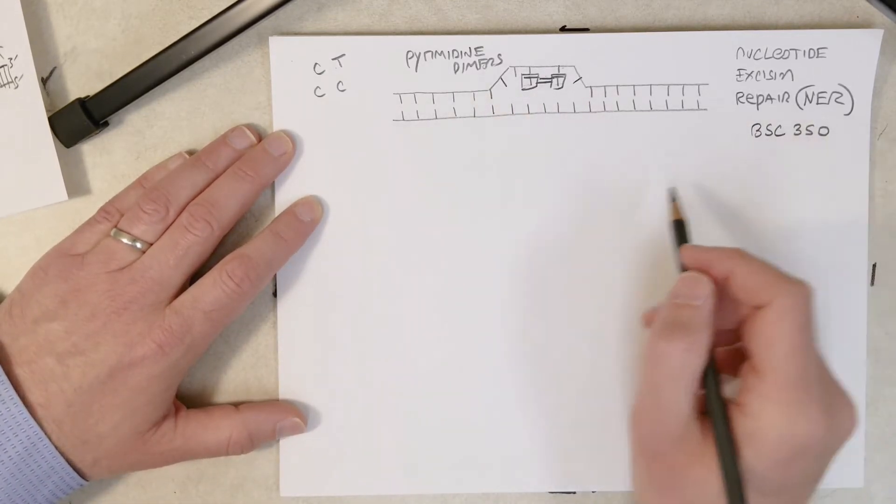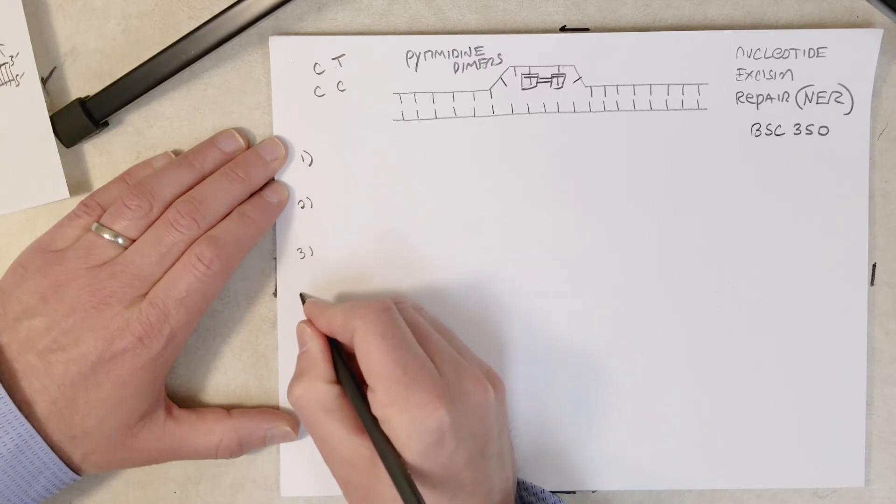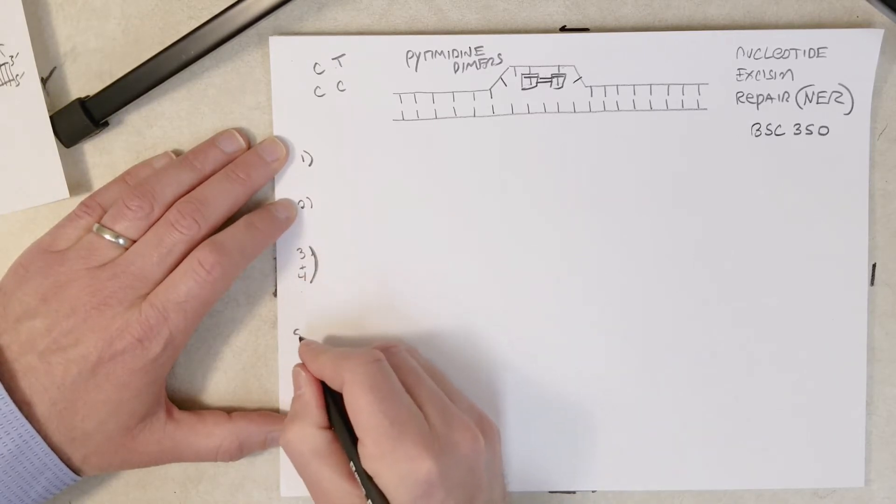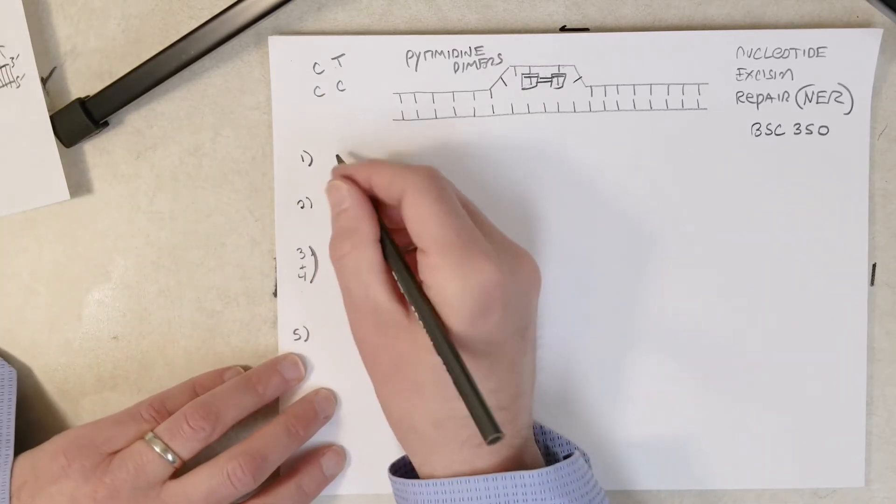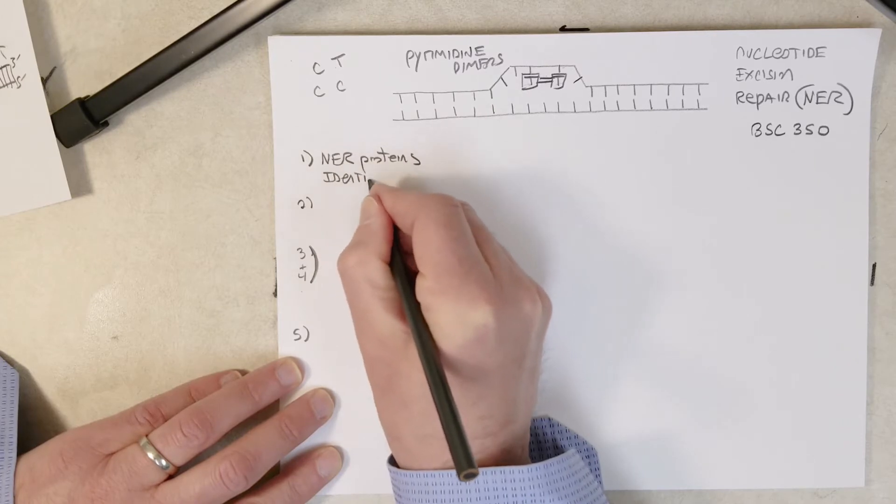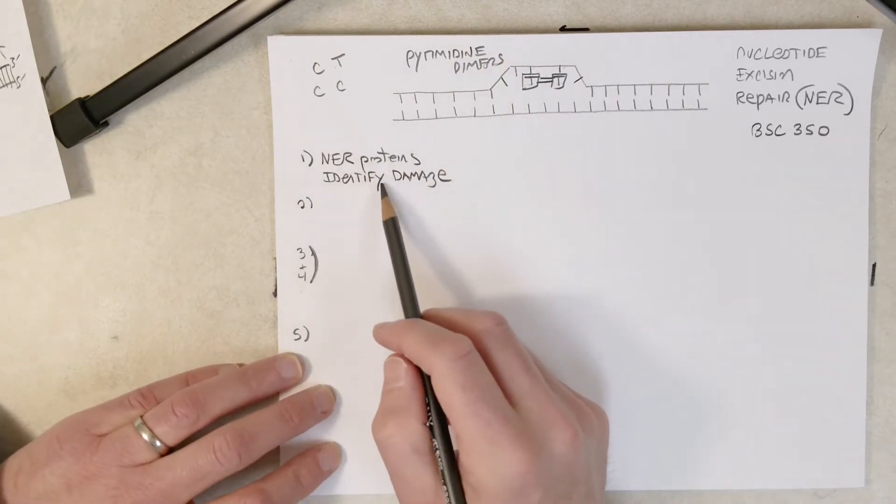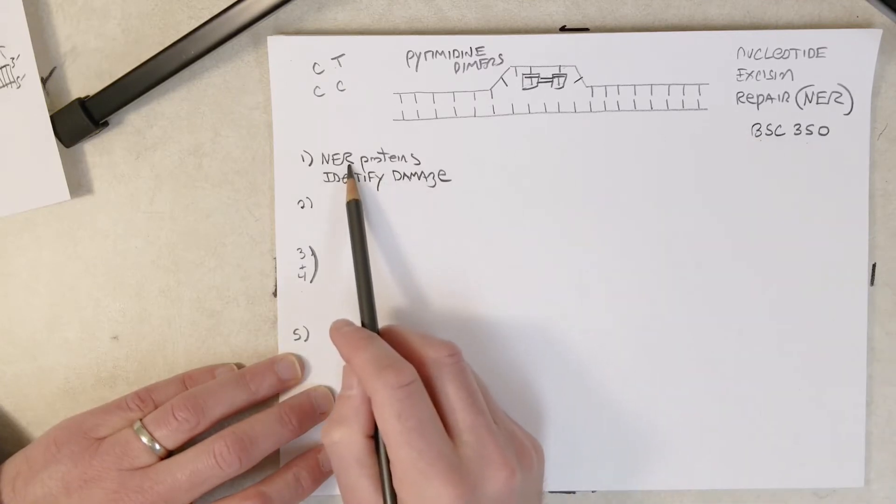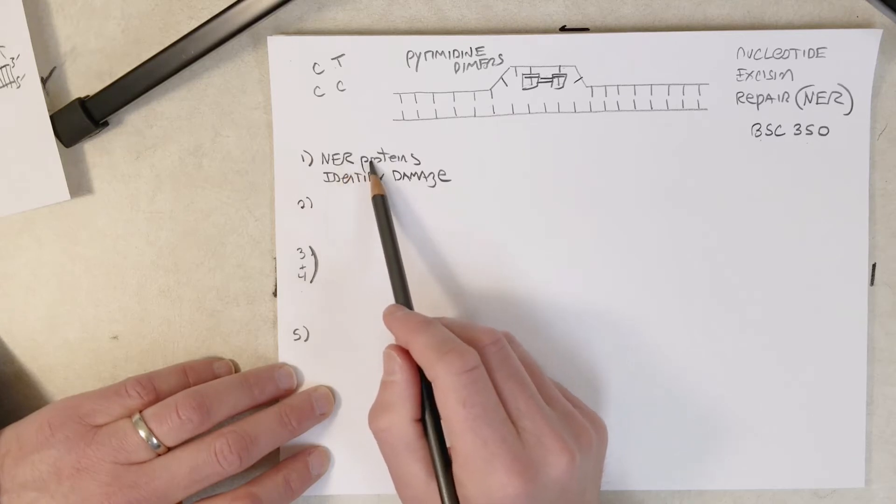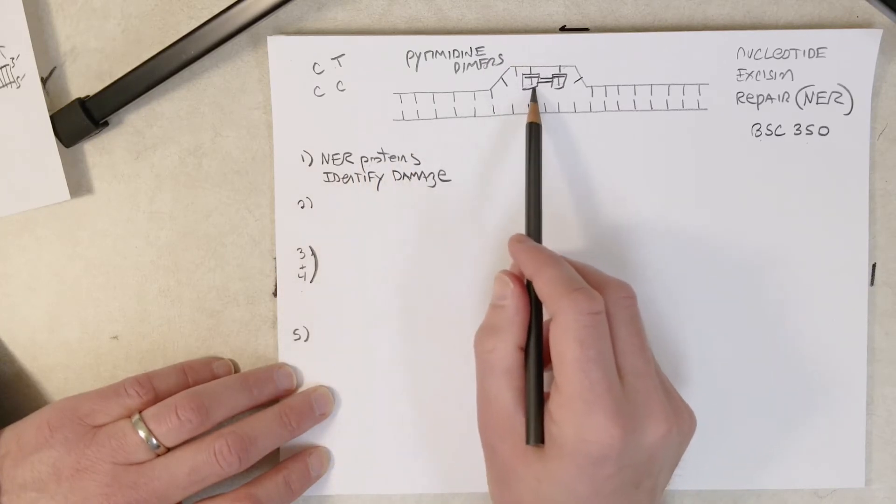So how does nucleotide excision repair work? We can divide it into five steps. In the first step, NER proteins identify the damage. Again, take BSC 350 if you want to know the identity of these proteins and how they identify the damage. For now we'll just say generic nucleotide excision repair proteins identify the damage. These are proteins that the cell has to look out for types of damage like this, like pyrimidine dimers.